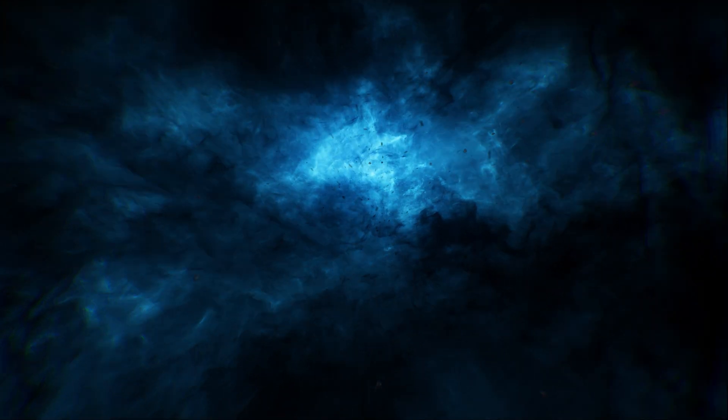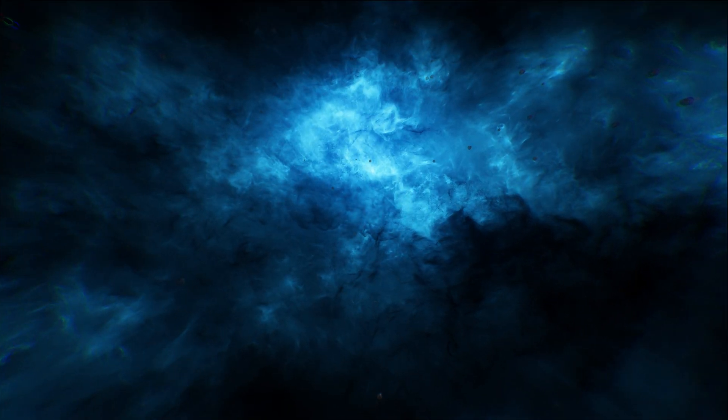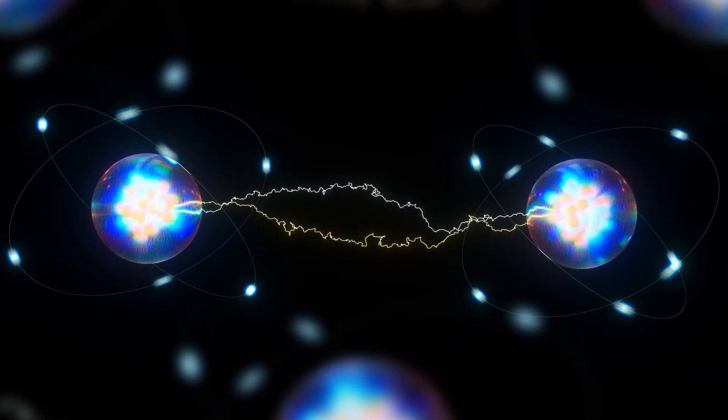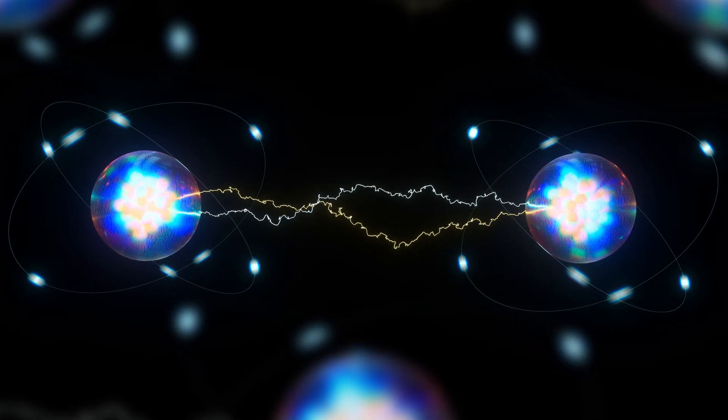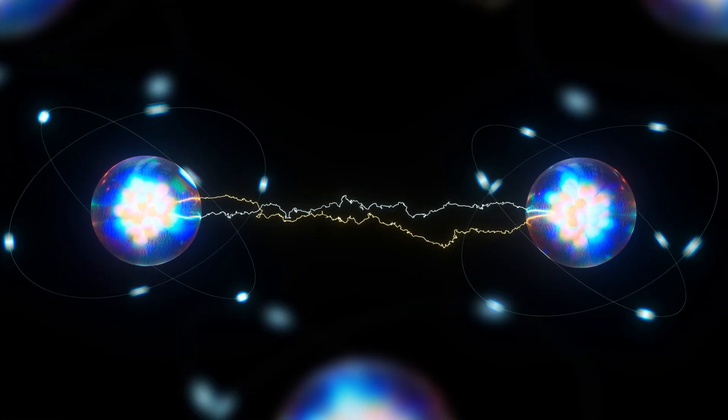Invisible threads instantly transmit information across unimaginable distances. The states of particles on these islands and outside the black hole are so closely connected that changes inside instantly reflect outwardly.